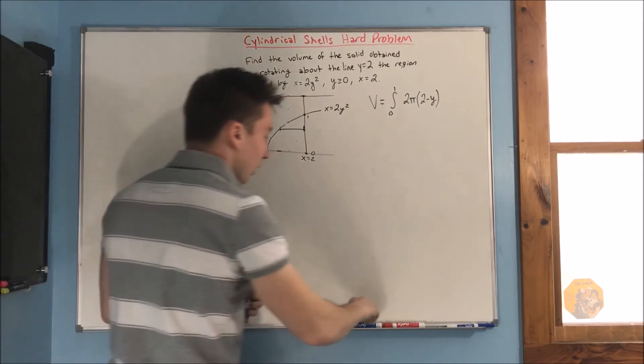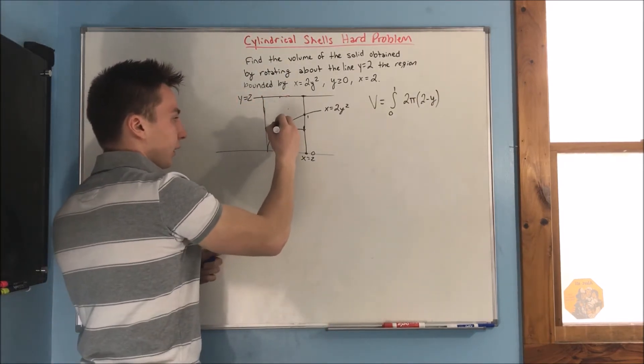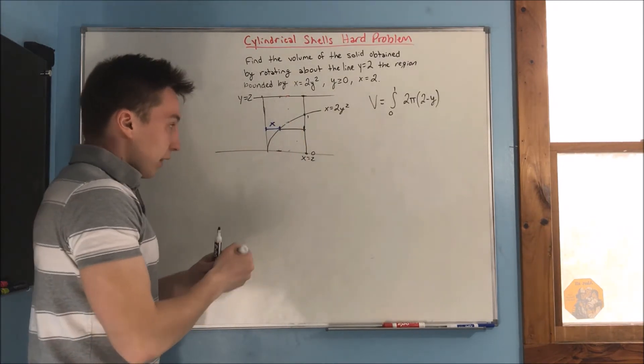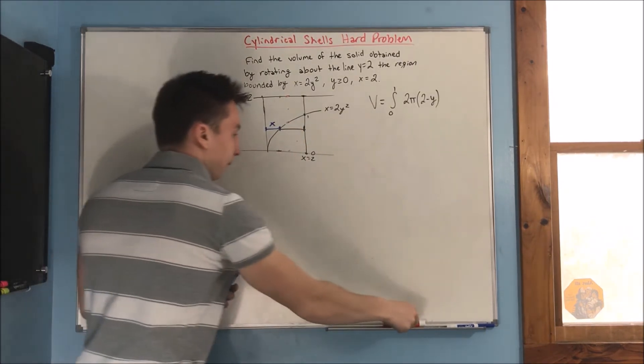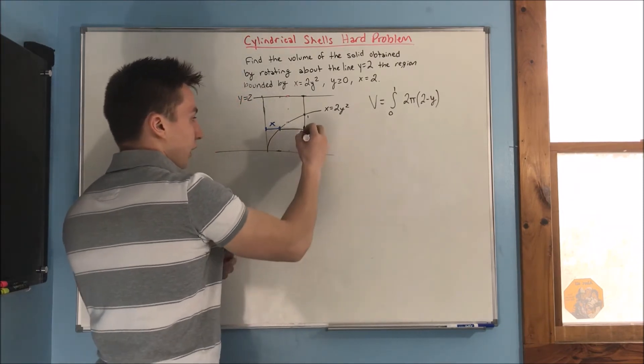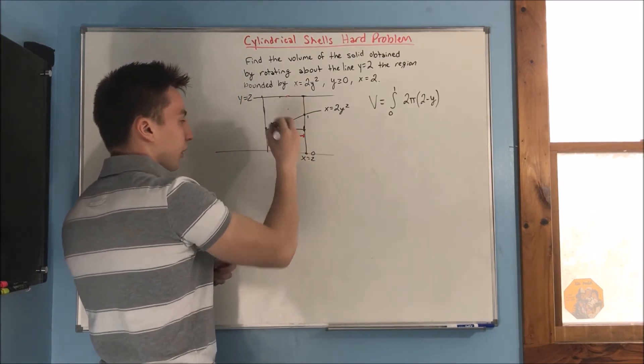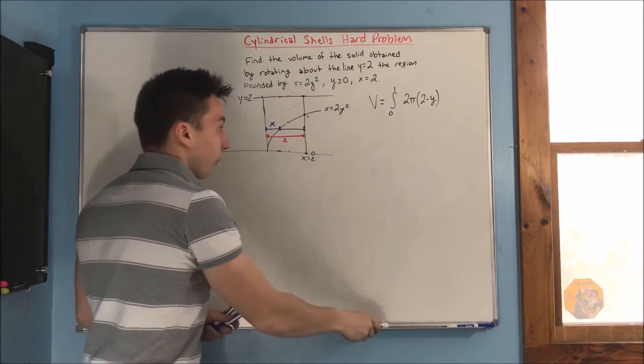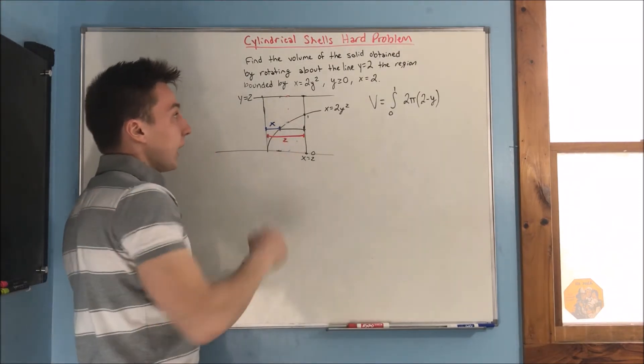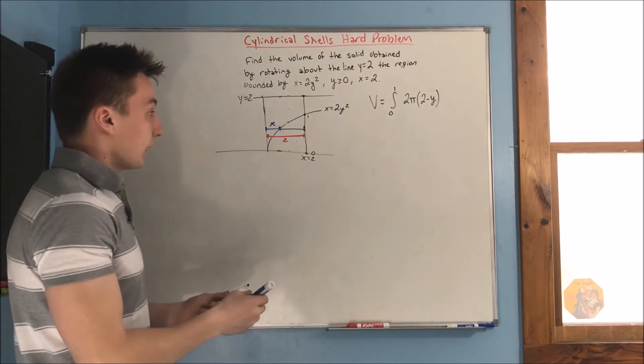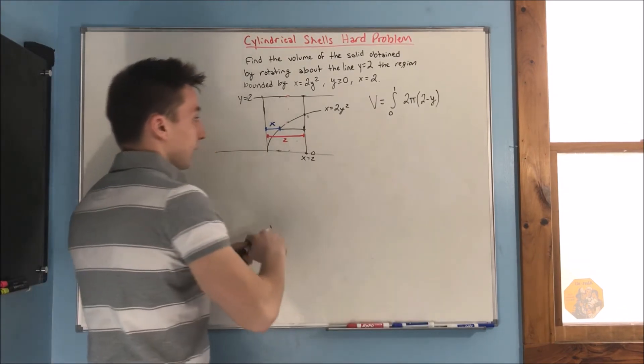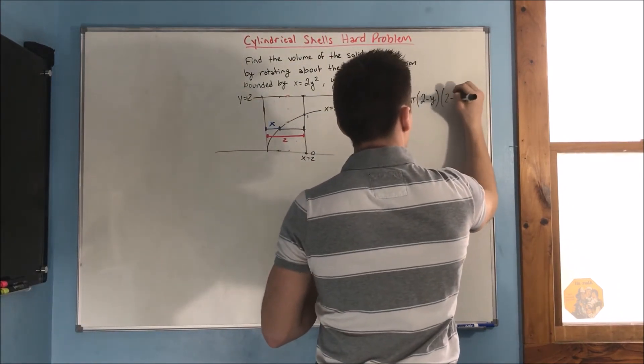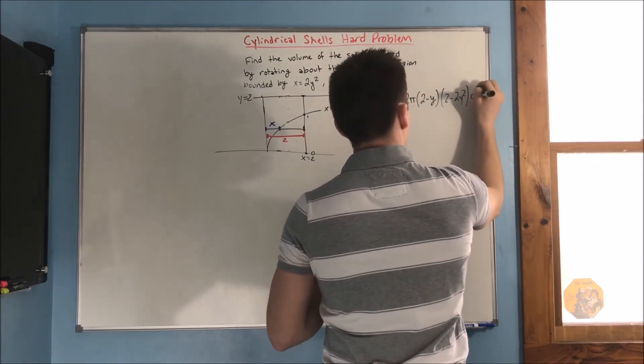we're talking about the distance from here to here. Okay? And, we know that the distance from here to here is x, and that the distance from the x equals 2 line to the y axis is 2. So, now, we have a 2 minus x. Well, what is x going to be? Well, x is 2y squared. So, we have a 2 minus 2y squared and we have a dy.